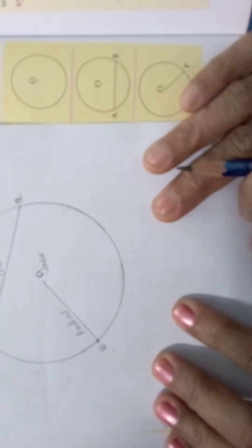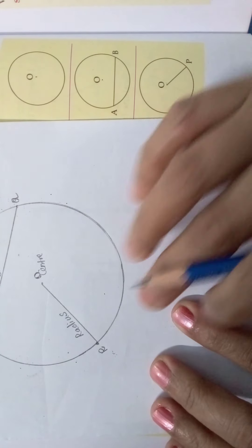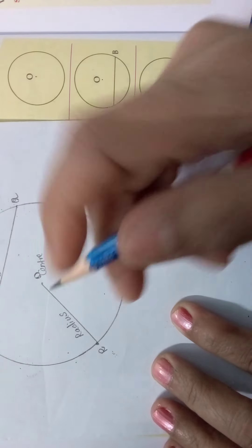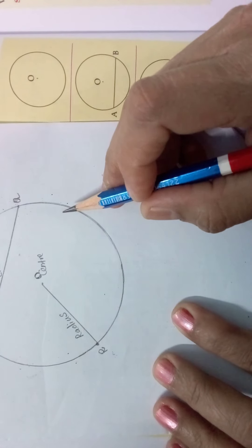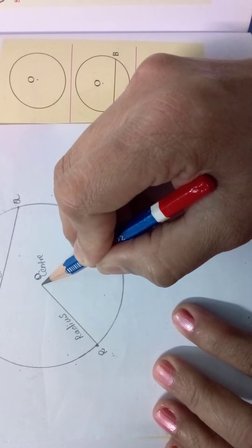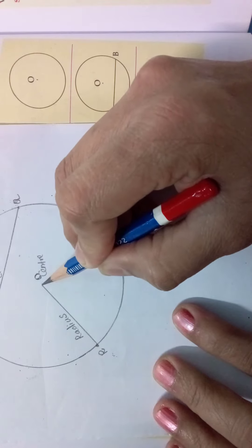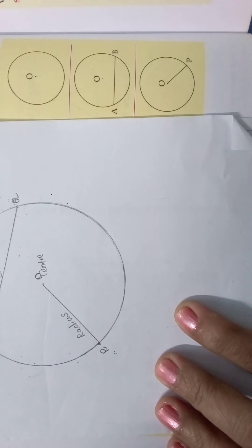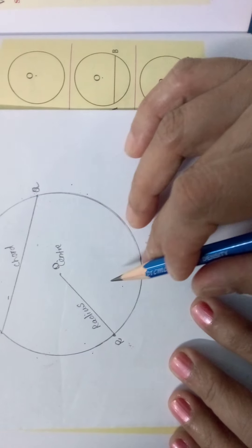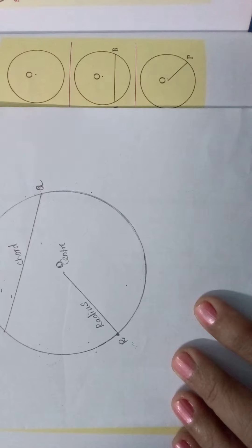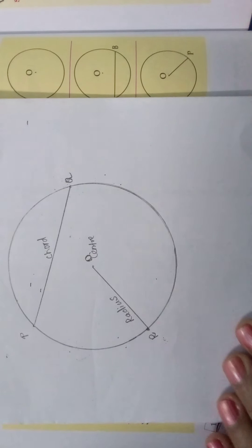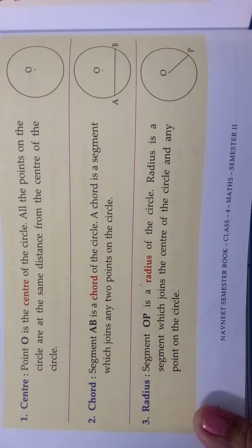This radius will be of the same length. If you take any point on the circle and join it with the centre, the length will be equal. The radius will be equal all over — wherever you take the point on the circle and connect it to the centre, the radius will be equal.